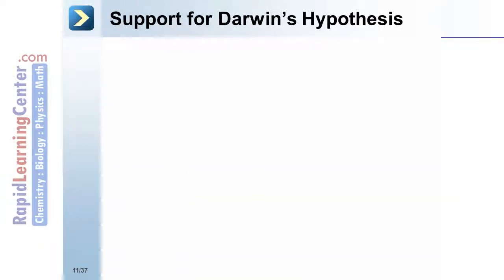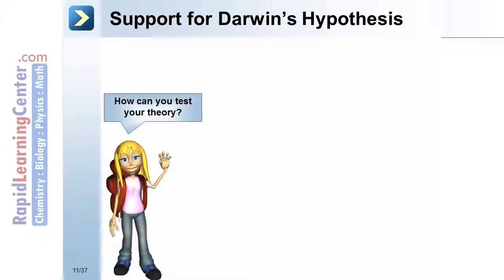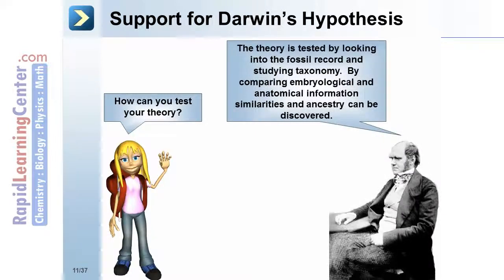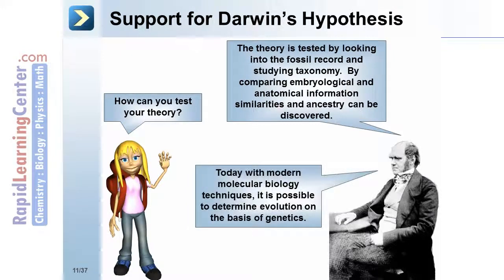The theory is tested by looking into the fossil record and studying taxonomy, by comparing embryological and anatomical information. Similarities and ancestry can be discovered. Today, with modern molecular biology techniques, it is possible to determine evolution on the basis of genetics.